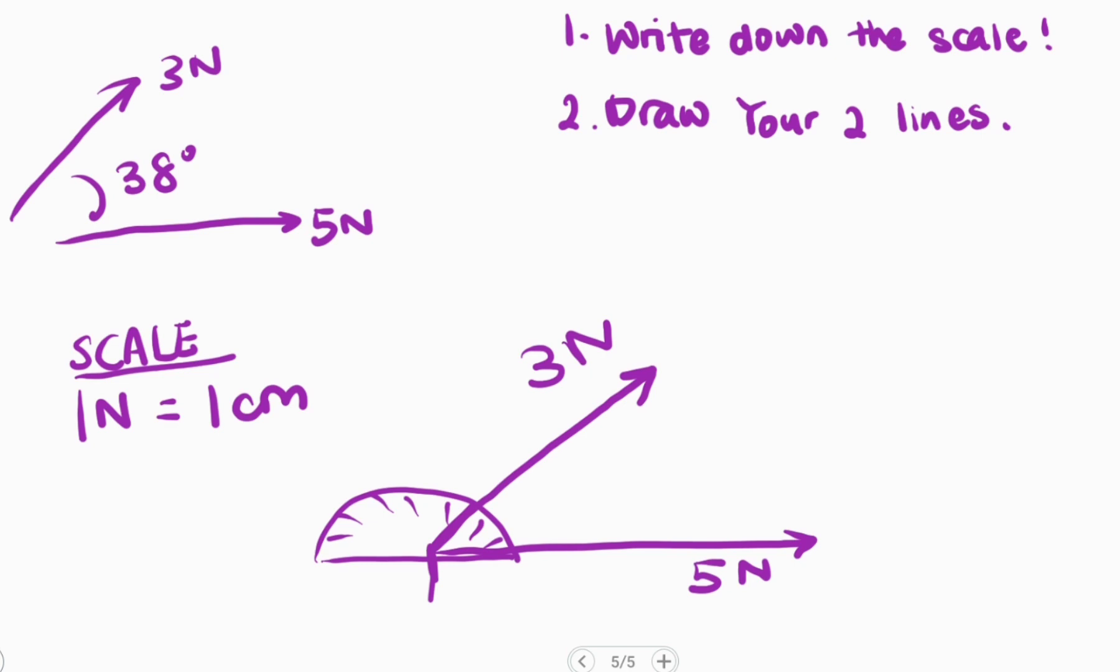Now the third step is to complete your parallelogram. So to complete your parallelogram, we want to look back at the information we learned about a parallelogram in the previous slides. So we learned that in a parallelogram, the opposite sides are equal in length and they're also parallel to each other. So I'm going to draw an opposite side to the 5 newton line. Because they have to be equal in length, my line is going to be 5 centimeters too and it's going to be parallel to the 5 newton line. This guy is also going to get another side that is parallel to the 3 newton line and it's also equal in length meaning that it's also going to be 3 centimeters long. And so we have completed our parallelogram. Easy peasy.